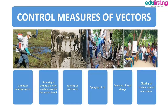Now, what are the control measures of vectors — how do we prevent vectors from inhabiting our homes? Number one is clearing of the drainage system; we should make sure our drainage is always clear with no stagnant water. Clearing gutters is also important. Spraying of insecticides can kill these vectors. Spraying oil on stagnant water also prevents mosquitoes from breathing underwater.